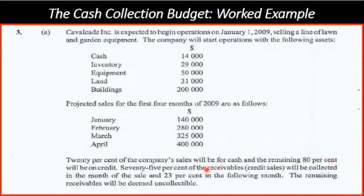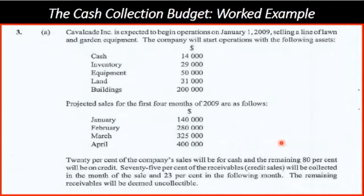The remaining eighty percent will be on credit. You should realize that 75 percent of the receivables — the credit sales — will be collected in the month of the sale, and 23 percent in the following month. The remaining receivables will be deemed uncollectable, or bad debt. The bad debt will not be included in the collection budget because you do not expect to collect it.